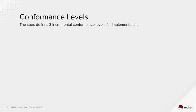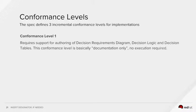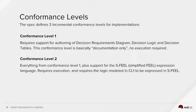There are three levels of conformance defined by DMN. The first level requires support for authoring of DRDs, decision logic and decision tables. But no execution is required. This means that it is basically just documentation only.